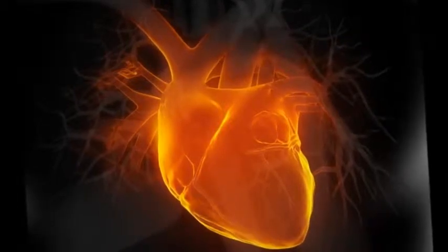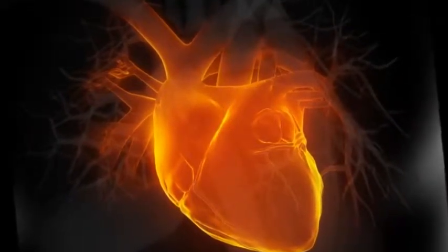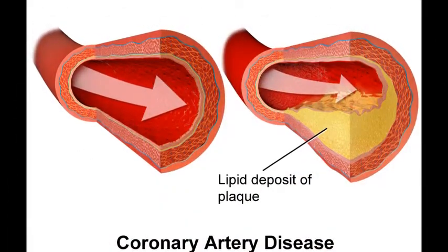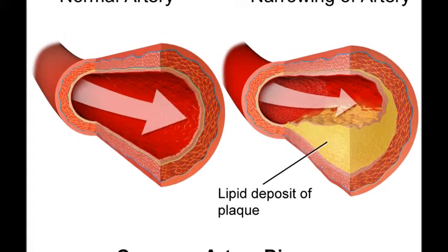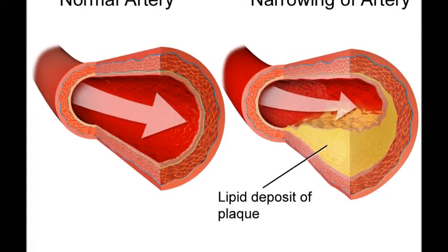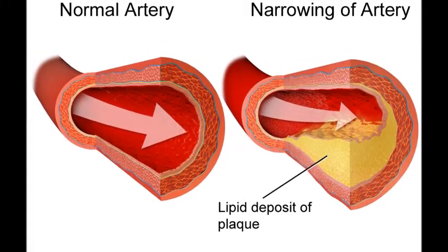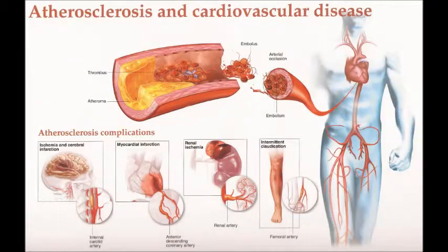Coronary heart disease is caused by one main condition that affects the arteries of the cardiac muscle. Occurring over several years, lipids and plaques steadily form within the blood vessels that deliver blood to the heart organ. Over time, the accumulation of lipids will clog the arteries and impair blood flow.